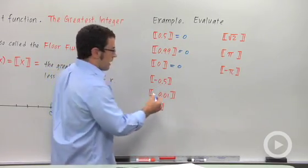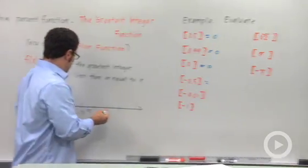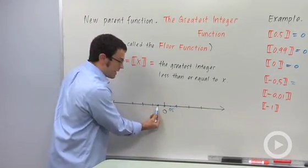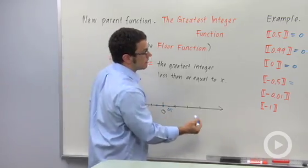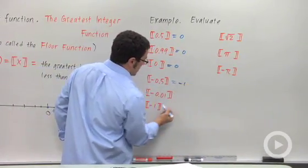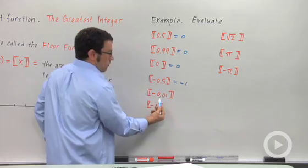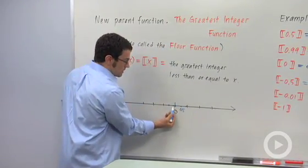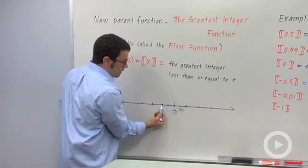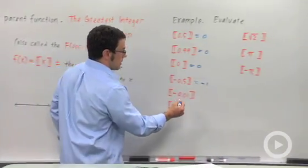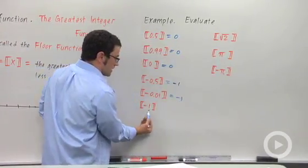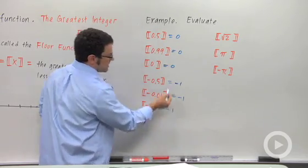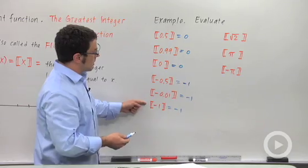What about negative 0.5? Negative 0.5 is right here on the number line. The greatest integer less than or equal to negative 0.5 is negative 1. How about negative 0.01? That's ever so slightly to the left of 0, so the greatest integer less than or equal to negative 0.01 is also negative 1. And of course the greatest integer less than or equal to negative 1 is negative 1. So all three of these numbers have the same greatest integer: negative 1.